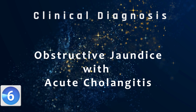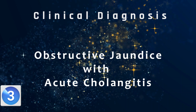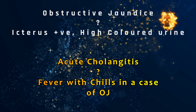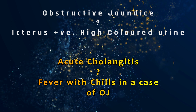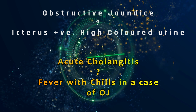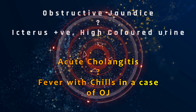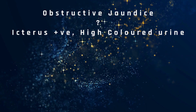The diagnosis of obstructive jaundice is evident as icterus was positive and the patient gave history of high-colored urine, though the other characteristic finding of clay-colored stool was absent. Why acute cholangitis? Any patient with a history of fever with chills and obstructive jaundice — the first diagnosis is acute cholangitis until proven otherwise. Just remember: any patient with obstructive jaundice presenting with fever and chills, we have to keep the first possibility as acute cholangitis.